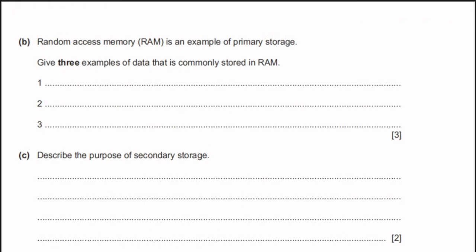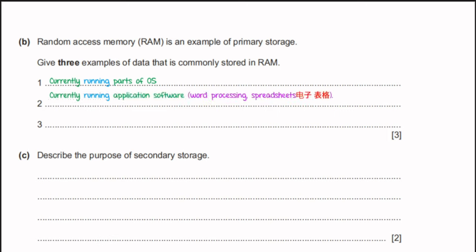Part B: RAM is an example of primary storage. Examples of data commonly stored in RAM include: currently running parts of the operating system, currently running application software such as Microsoft Word or Photoshop, and currently running utility software such as antivirus or compression utilities. All programs currently in use are stored inside the RAM.